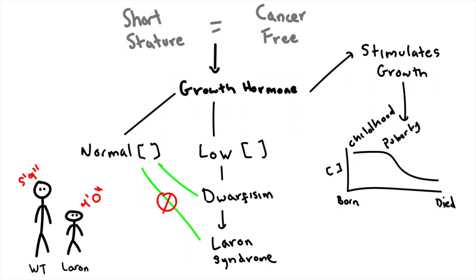This is because individuals with Laron syndrome already have normal levels of growth hormone. It's just that the growth hormone receptor is mostly non-functional. In essence, they are immune to growth hormone. This means that despite having normal levels of growth hormone, people with Laron syndrome will still be very short of stature.